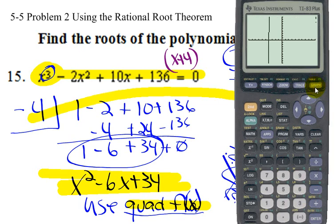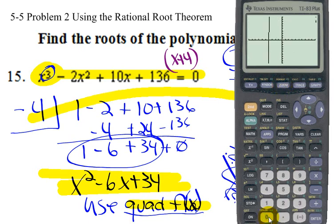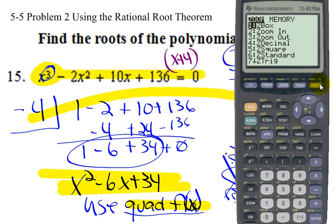Press enter and hit the graph button to see what it looks like. The roots are where it crosses the x-axis. The graph scrolls and it looks like it goes off the screen, so I'm going to zoom to fit the window by going to Zoom > Zero to get a better view. We can see there appears to be a root — that gives us a starting point.